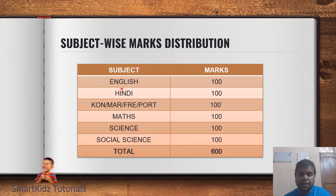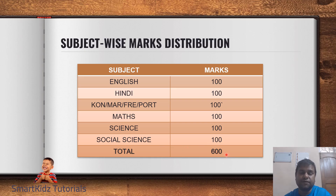You have six subjects total. Social science includes both history and geography, so it counts as 100 marks. The other subjects are English, Hindi, your third language, math, science, and social science — each out of 100. The total adds up to 600. Your final percentage will be calculated out of 600.